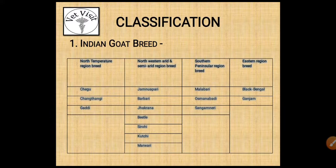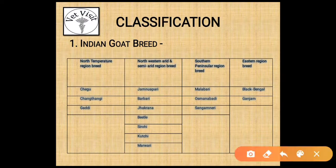Indian goat breeds are classified on the basis of their geographical locations into: north temperate region, north western arid and semi-arid region, southern peninsular region, and eastern region breeds. North temperate region breeds include Chigu, Chantangi, and Gadi.